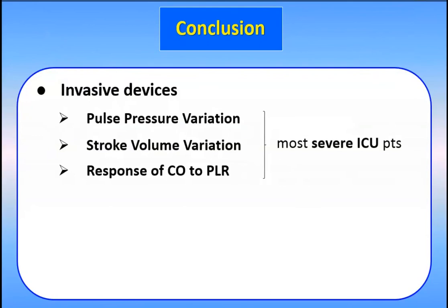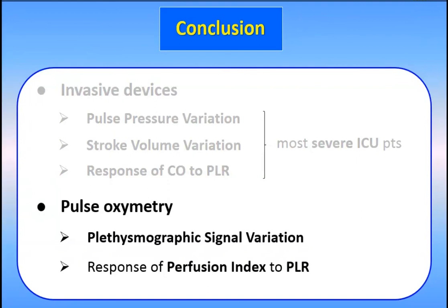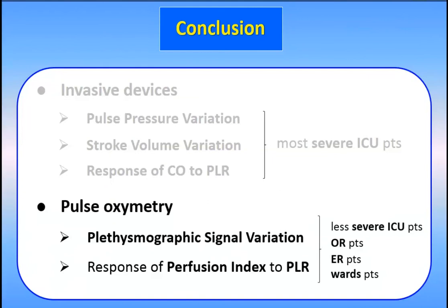In conclusion, we can use invasive devices — PPV and SVV — in most ICU patients, but we can also use pulse oximetry by looking at plethysmographic signal variation or by looking at the response of the perfusion index to passive leg raising. This could be dedicated to less critically ill ICU patients, OR patients, emergency room patients, or ward patients. Thank you very much for your attention.